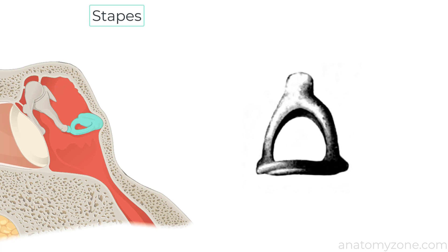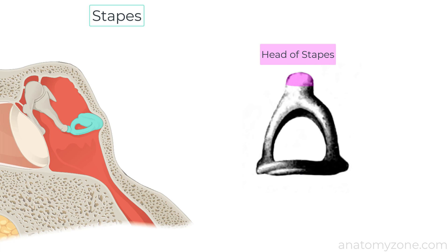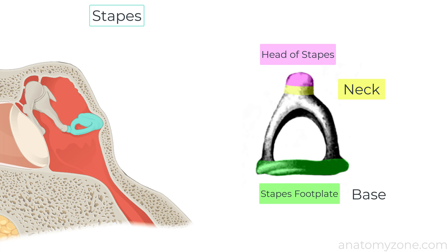The stapes is the smallest of the ossicles and the smallest bone in the human body, and is comprised of a head, a neck, two limbs and a foot plate. The head of the stapes is concave and articulates with the long limb of the incus via the lenticular process. Just beneath the head is the neck of the stapes which is connected to the foot plate or base of the stapes by the anterior and posterior limbs.